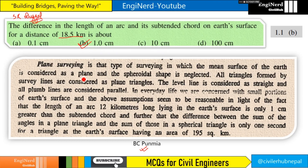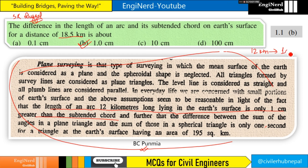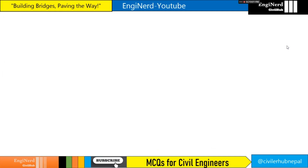This particular reference is from BC Fonmia. He says: length of an arc 12 kilometers lying on the earth's surface is only one centimeter greater than the subtended chord. So BC Fonmia also says 12 kilometers corresponds to one centimeter. Everything is consistent so far — all authors say 12 km equals one centimeter.